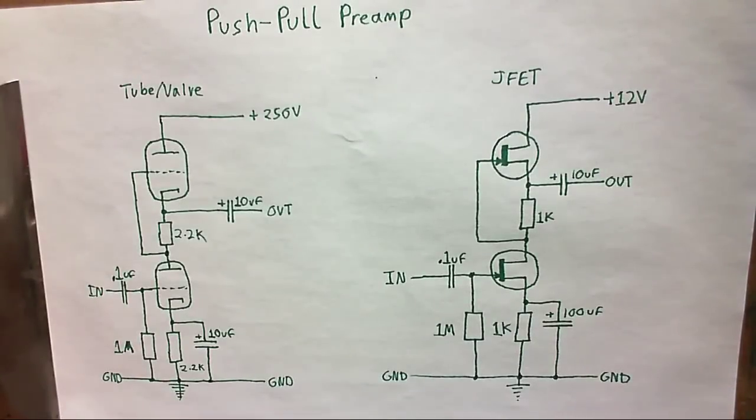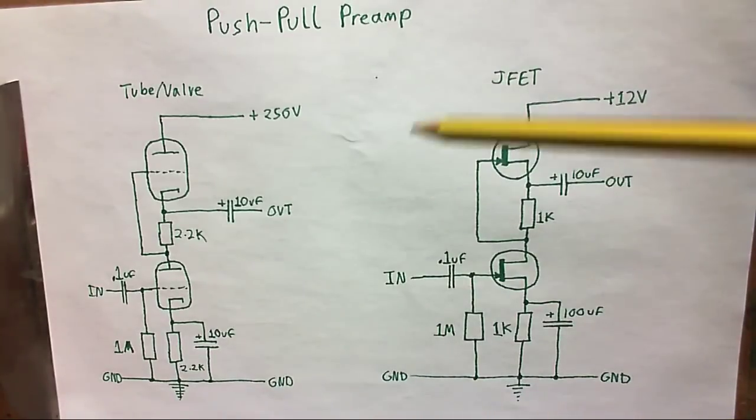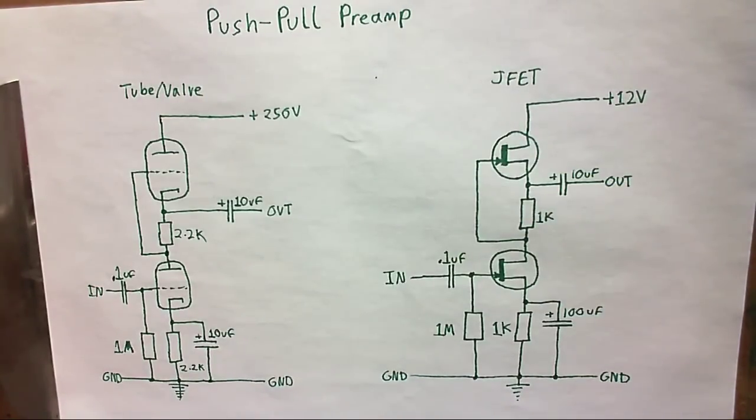Okay, so what we're looking at here is a couple of circuits that I found while I was browsing the internet. And what these are are preamp circuits. And the really interesting thing about these is that they are push-pull, so none of that Class A stuff. And the other interesting thing about it is, well, just look at it. They're both the same circuits, except one's using valves and the other one's using JFETs.